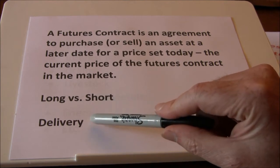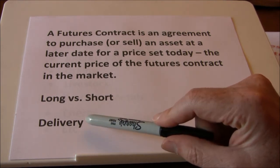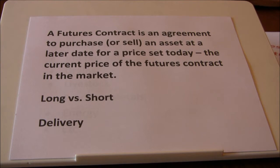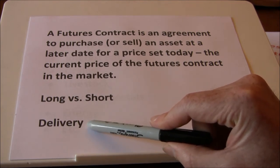Another issue affecting delivery is that when futures contracts originated, most were on commodities. However, now we have contracts on weather — I can't deliver somebody the weather, so those are cash-settled contracts. Many different types of contracts, including stock index futures, are not set up to deliver an underlying asset but are instead cash settled. So delivery may or may not occur in the futures market.